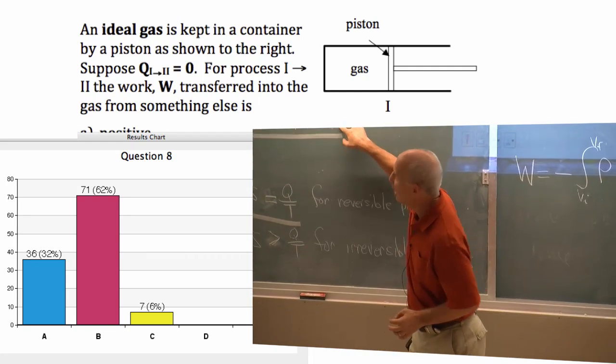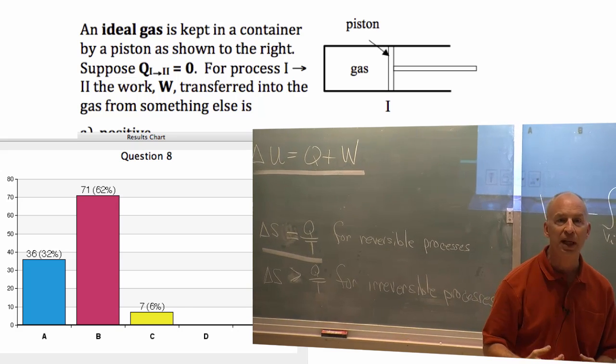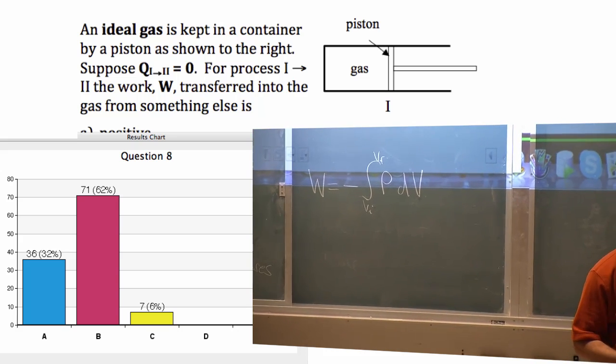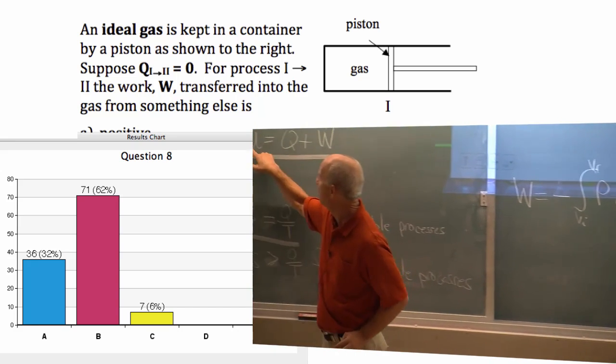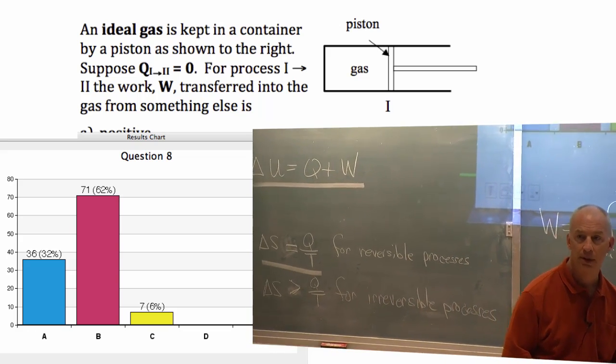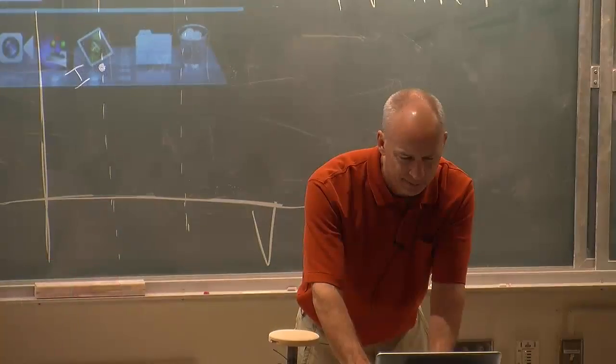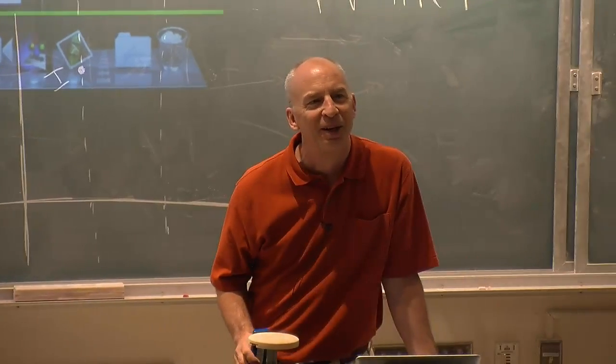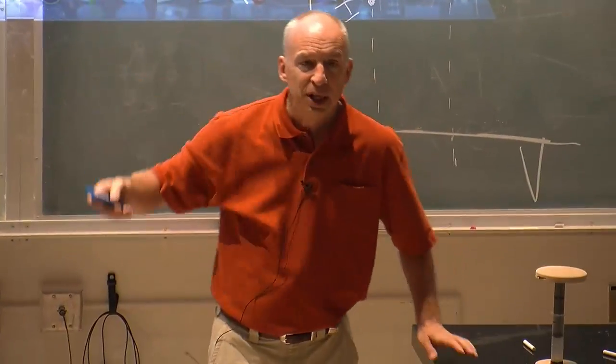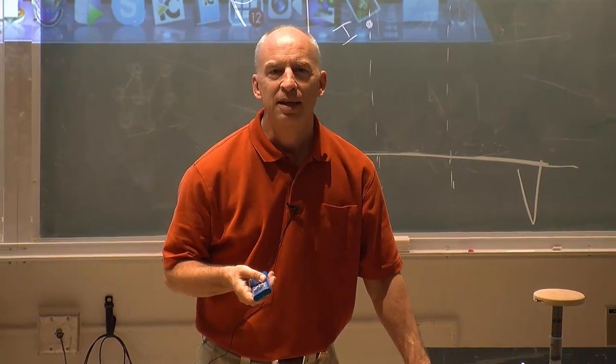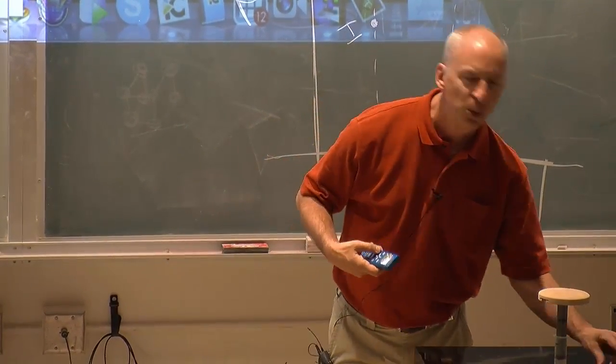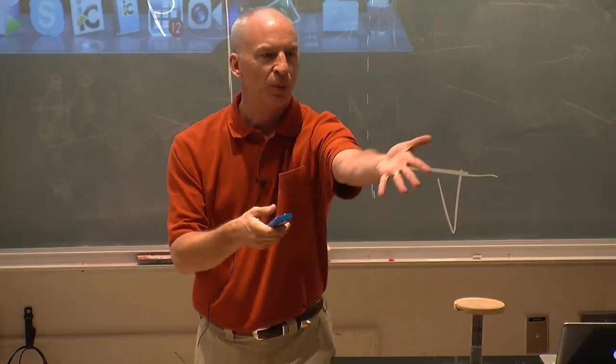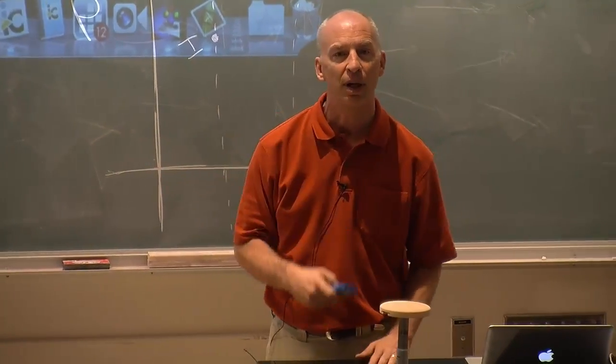I feel like saying W, we've defined as the work energy transferred into the gas. Just like Q is the heat energy transferred into the gas, as long as delta U is the change in the internal energy of the gas. It's always a little tricky what words you're using here, because often you would say the gas did work on something. And, that... If the gas did work on something, then it lost energy, because it was doing work on something, and that other thing gained energy.